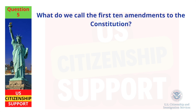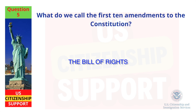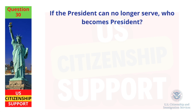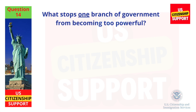What do we call the first ten amendments to the Constitution? The Bill of Rights. If the president can no longer serve, who becomes president? The Vice President. What stops one branch of government from becoming too powerful? Checks and balances.